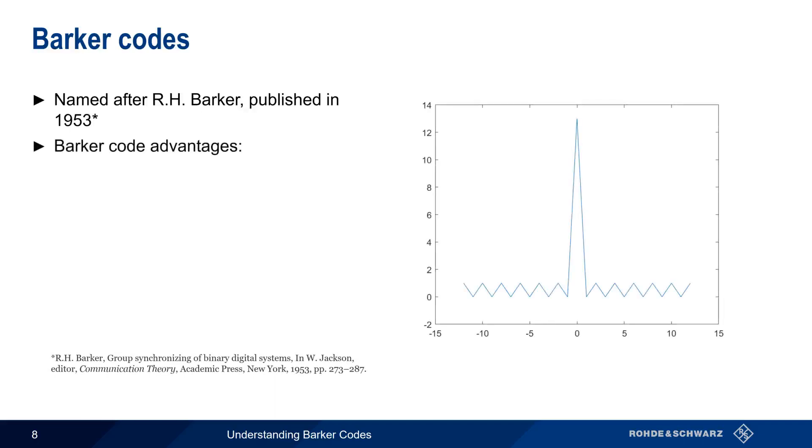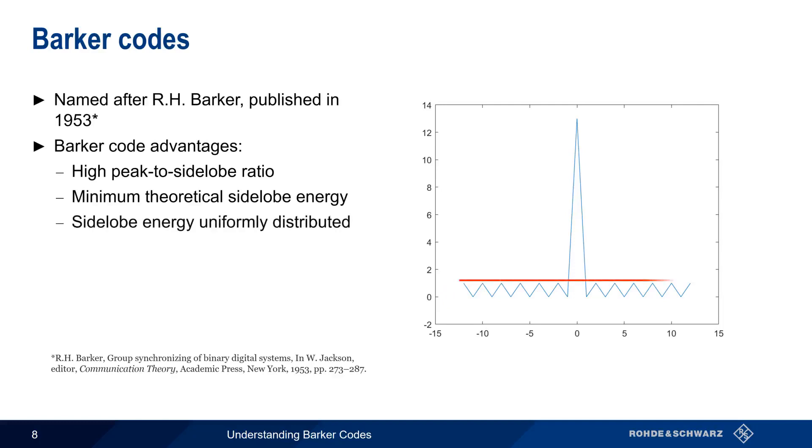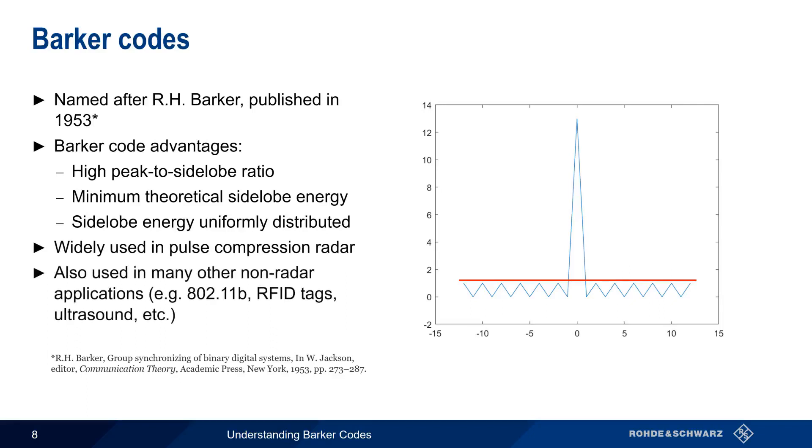Barker codes have three main advantages. First, they produce a very high peak to side lobe ratio. Second, they have the theoretical minimum energy in the side lobes. And third, the side lobe energy is uniformly distributed. Although Barker codes are best known for their use in radar, Barker's original application had nothing at all to do with radar. In fact, Barker codes are now used in a wide variety of non-radar applications, such as 802.11b Wi-Fi, saw-based RFID tags, ultrasound, etc.